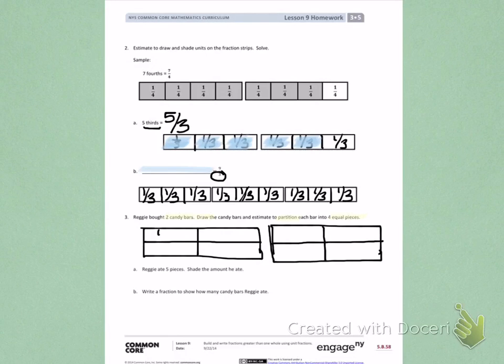Each of these is 1 fourth. Those are my unit form, because each whole was divided into 4 equal parts. So I am partitioning each into 1 fourth.